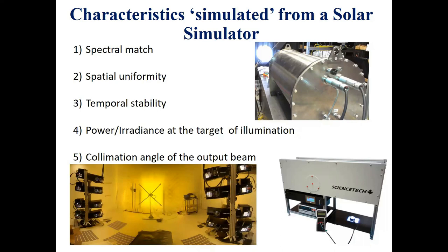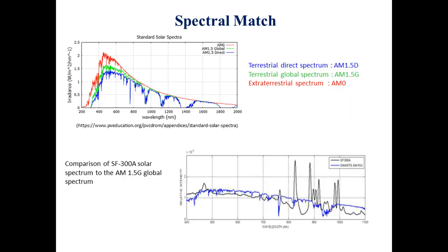The first characteristic we are going to be discussing is the solar spectrum. The figure on the top left shows the wave bands of the spectral distribution for different reference conditions. There's the terrestrial direct spectrum, which is AM1.5D, shown in blue. There's also the terrestrial global spectrum, which is AM1.5G, shown in green. And there's the extraterrestrial spectrum, or what we call the space spectrum, in AM0, shown in red. The figure in the bottom right corner is a comparison of the AM1.5G spectrum to one of our own solar simulators, SF300A — it's a pretty good match. Standards have been developed to regulate how well the spectrum of the solar simulator matches that of the sun.